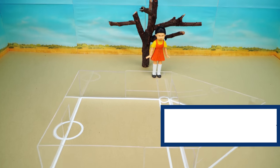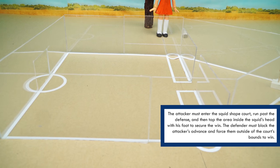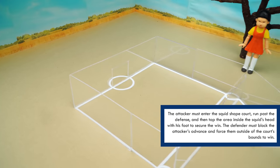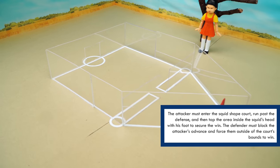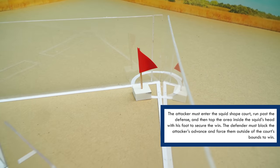Welcome to the final game. The attacker must enter the squid shape court, run past the defense, and then tap the area inside the squid's head with his foot to secure the win. The defender must block the attacker's advance and force them outside of the court's bounds to win.